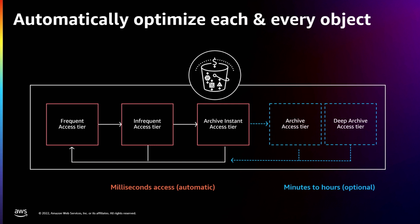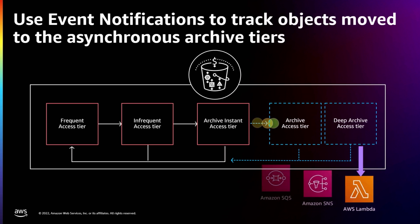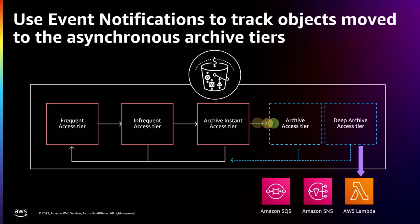Not many customers use all storage classes we have today — it's hard to figure out which to use, and most use only one or two. Our recommendation is to start with Intelligent-Tiering, because it often does the job for you and the monitoring fee is very low. Intelligent-Tiering also works well with serverless applications — with Lambda, SQS, or SNS.